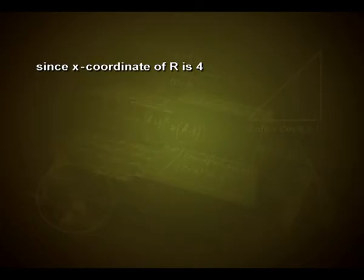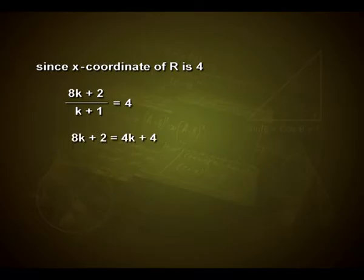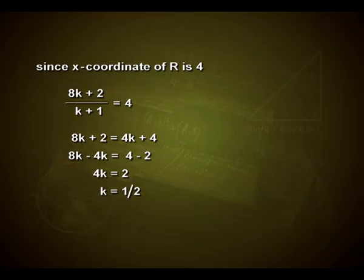Since the x-coordinate of R is 4, we equate (8k+2)/(k+1) = 4, which on cross-multiplication gives 8k+2 = 4k+4. Collecting like terms: 8k−4k = 4−2, which gives 4k = 2, or k = 1/2.